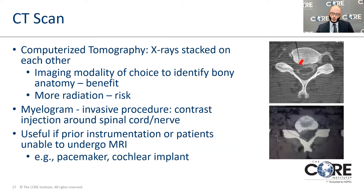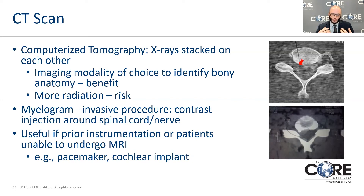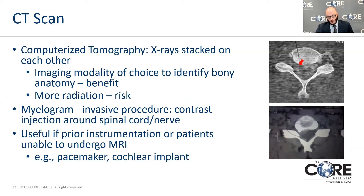CT scans give us the best view of the bones. We often get these in patients with prior surgeries or when we're looking for fusions. This is a 3D representation of x-rays stacked on top of each other. It's a radiation study, as opposed to MRI which has no radiation — that is one of the downsides of CT scans. Prior to MRIs becoming widespread, we assessed stenosis by injecting dye in the spinal column around the nerves in the epidural space — this is called a myelogram, an invasive procedure. We now only do this for patients unable to undergo MRI, such as those with certain pacemakers or cochlear implants.